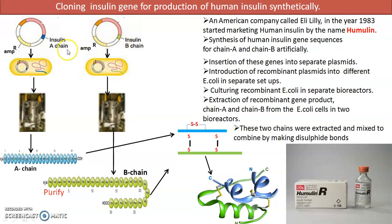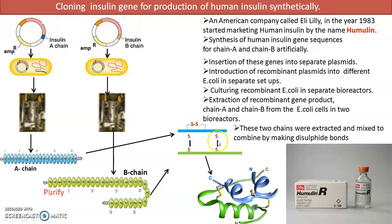The recombinant plasmids were introduced into E. coli cells, the recombinant cells were screened, and then cultured in separate fermenters. Chain A and chain B were thus produced separately. After separate production, they were mixed together under conditions that allow disulfide bonds to form between the specific cysteine amino acids, as described earlier — including the bonds within chain A. This mixing and disulfide bond formation gave the protein its correct folding. The two chains were extracted, combined, purified, and this is how Humulin was produced and marketed.